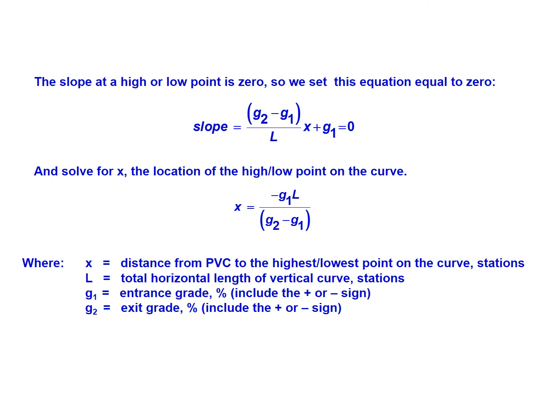So again, x is the distance from the PVC to that highest or lowest point on the curve in stations. L is the total horizontal length of the vertical curve in stations. G1 is the entrance grade. We've got to make sure that's in percent and that we include the positive or negative sign. G2 is the exit grade, again in percent, not in decimal, and include the positive or negative sign with that as well.